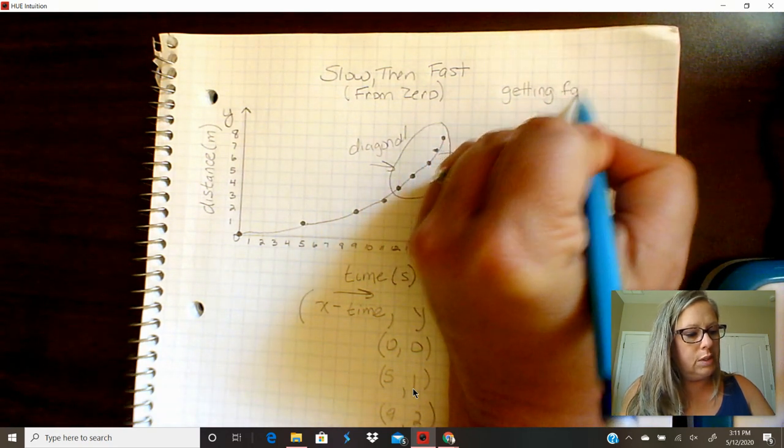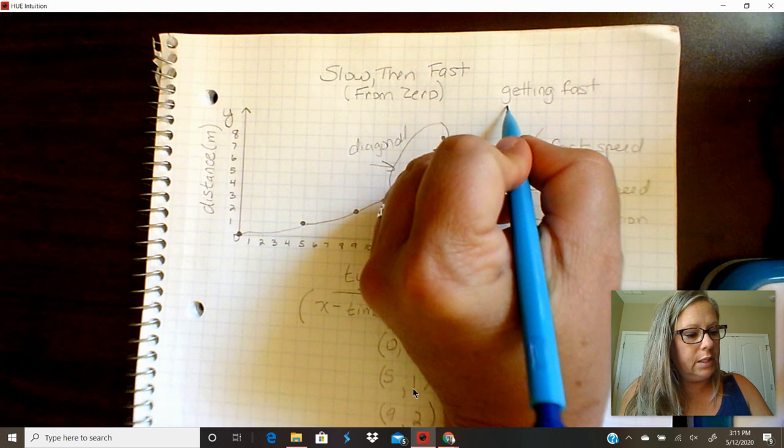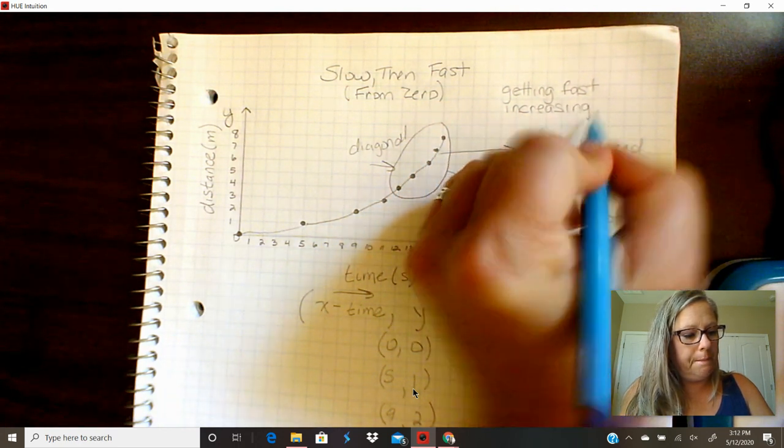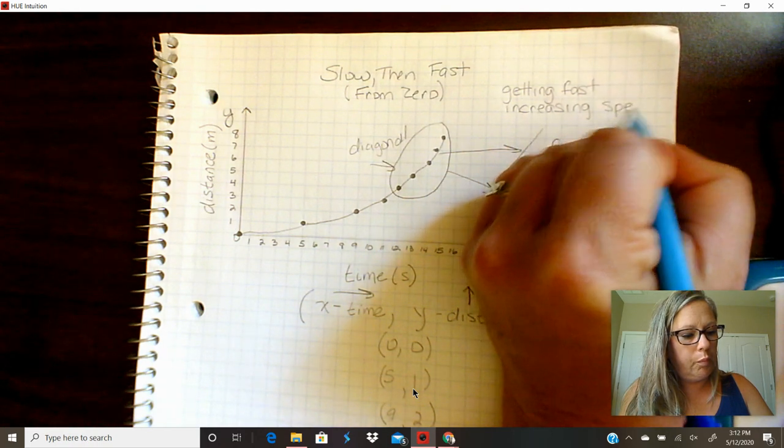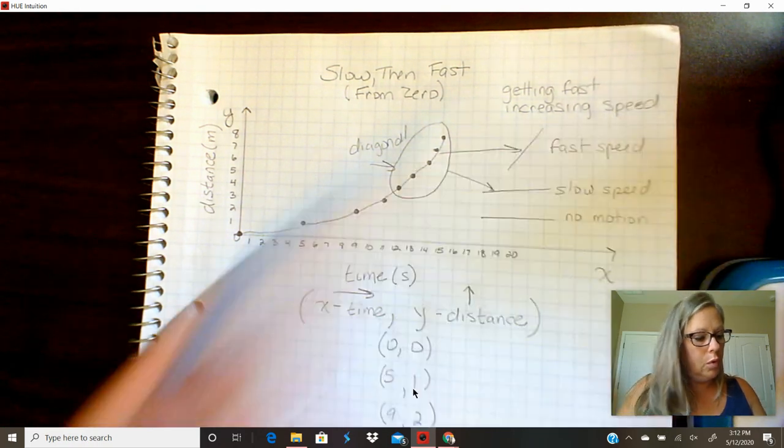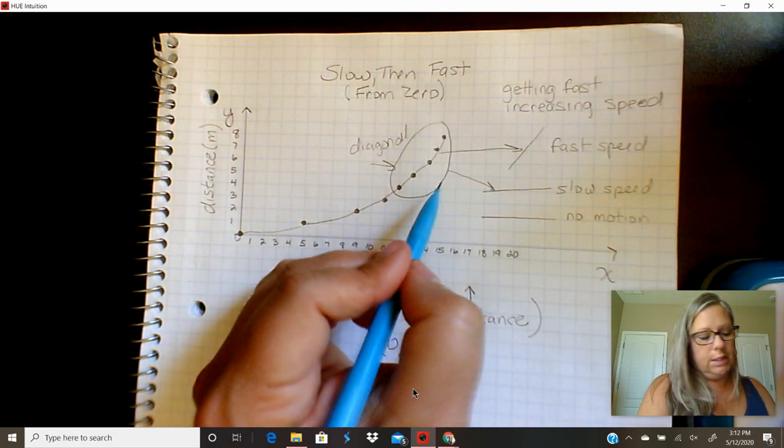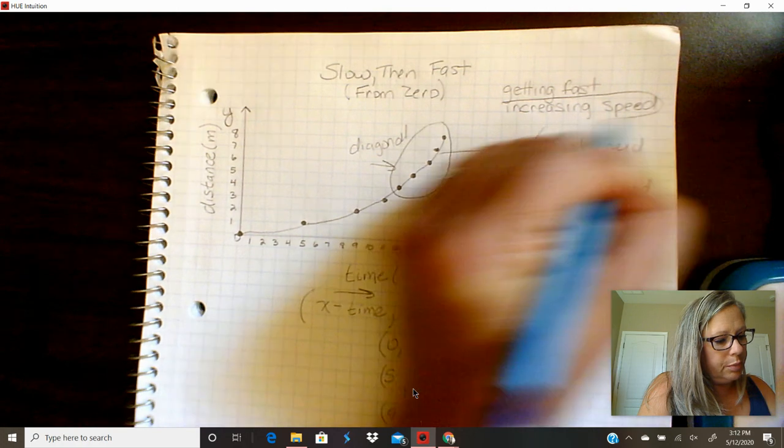And of course in science we always would say it like this: increasing speed. So when you see that the end of the diagonal is getting very steep you know that you're increasing speed.